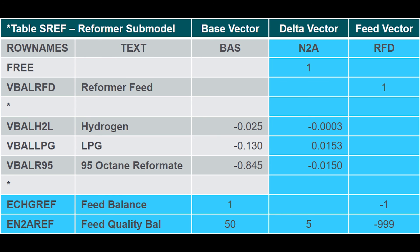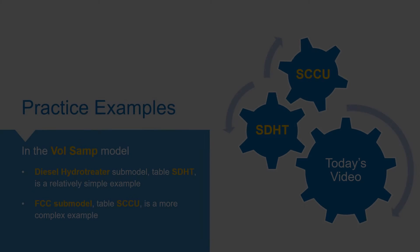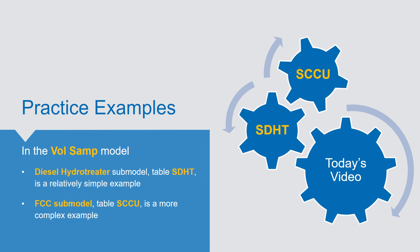Lastly, we can also adjust yields based on multiple feed properties at multiple operating conditions. If you're looking to learn more about this, you can refer to the volume sample model. The diesel hydrotreater submodel table SDHT is a relatively simple example, similar to the one we did today. Or you can look at the FCC submodel table SCCU for a more complex example.